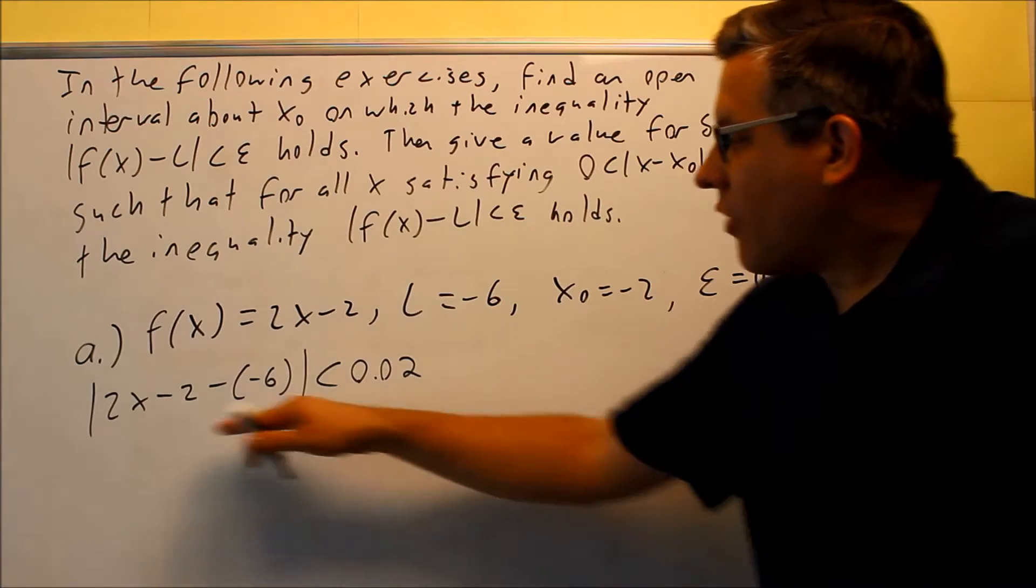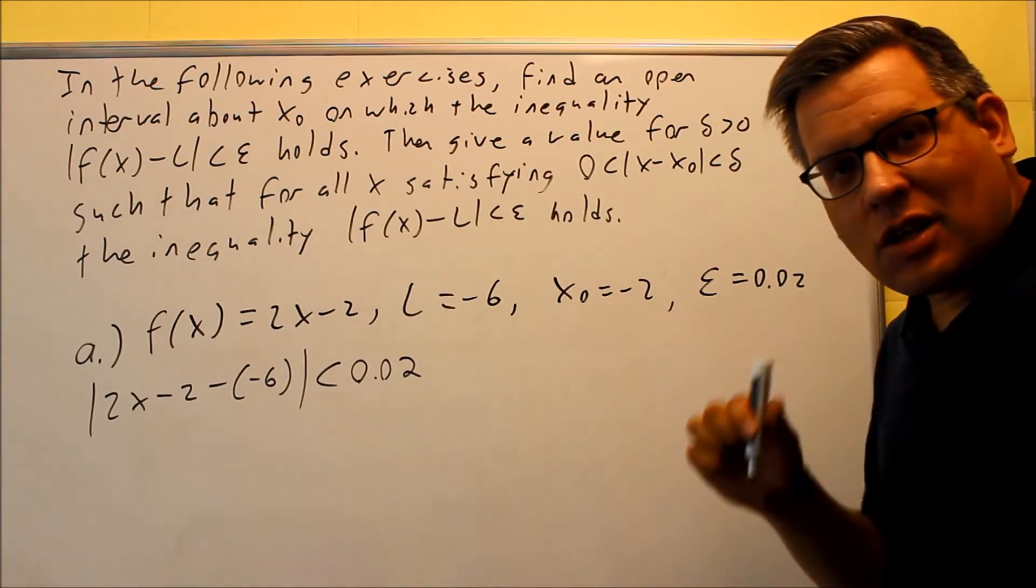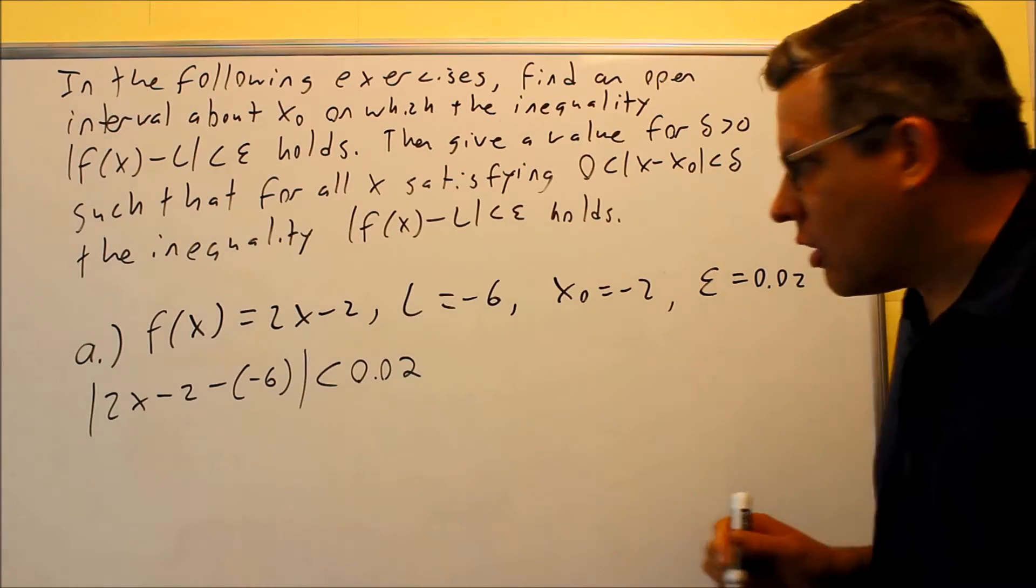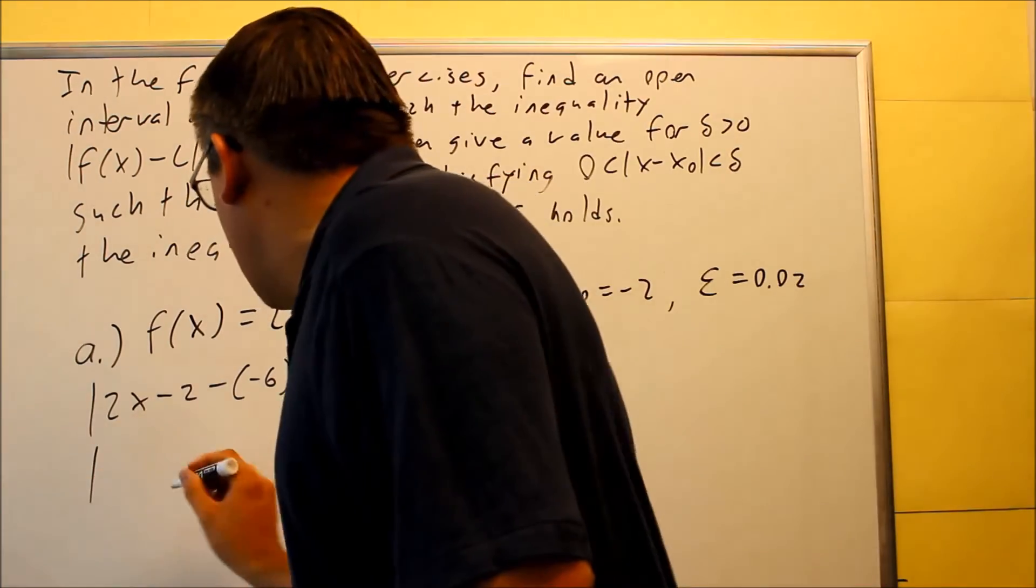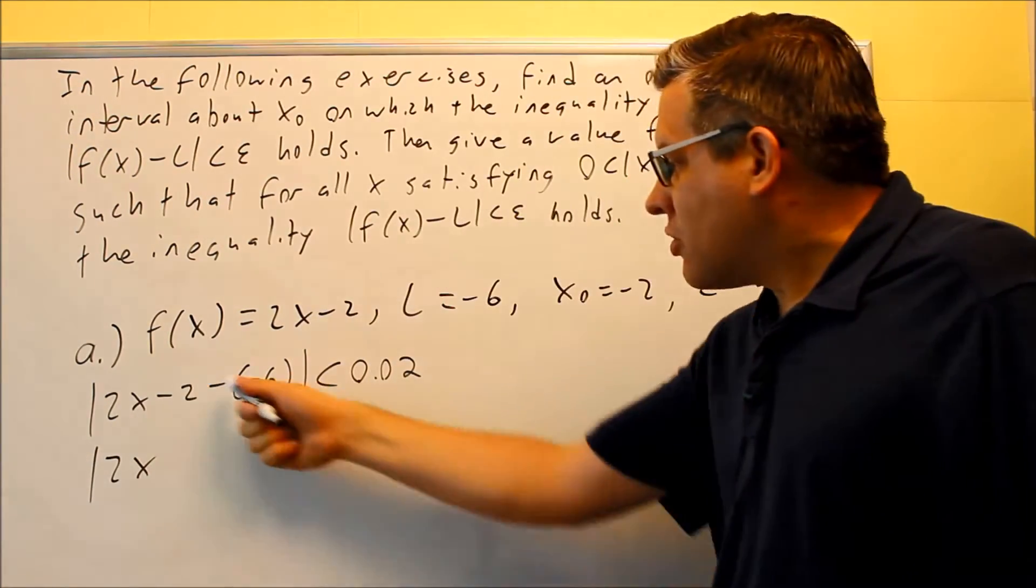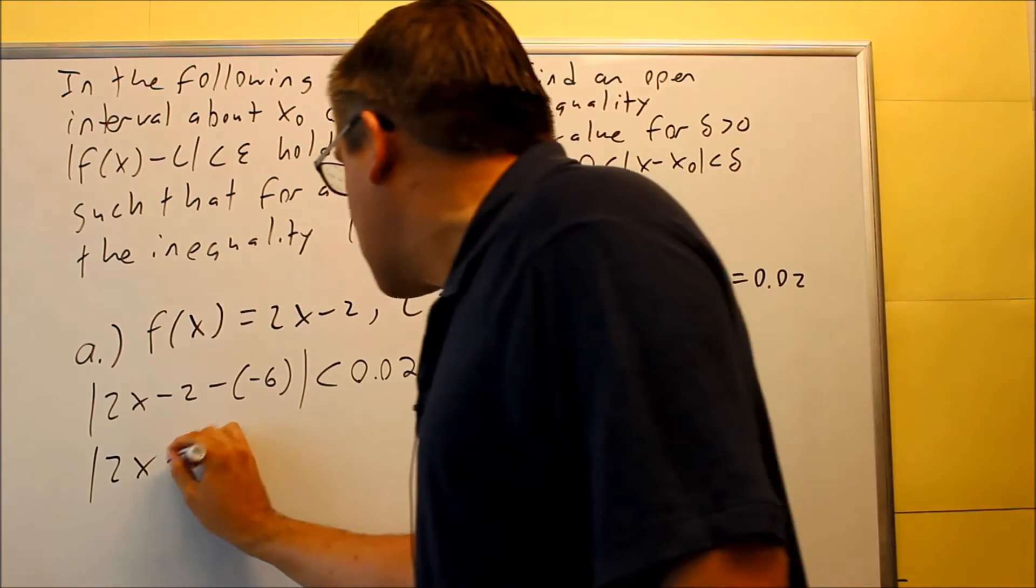So what we have to do is solve this equation for x, and then that's going to give us the interval that they're looking for here. So when we do that, we have 2x, and then this is a plus 6 and a minus 2, so plus 4.